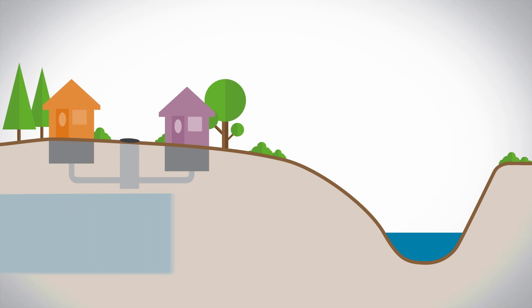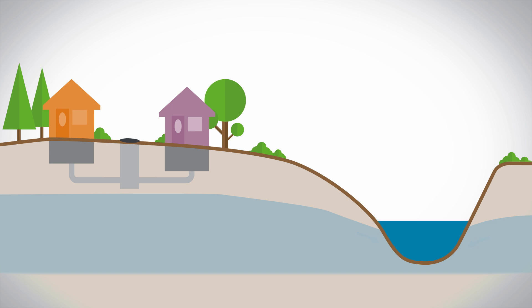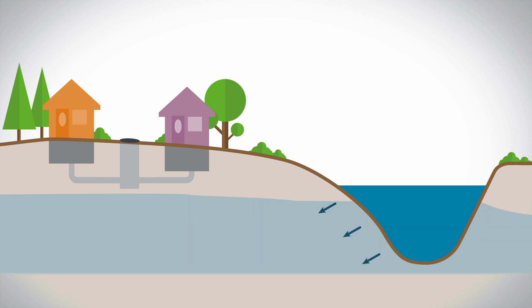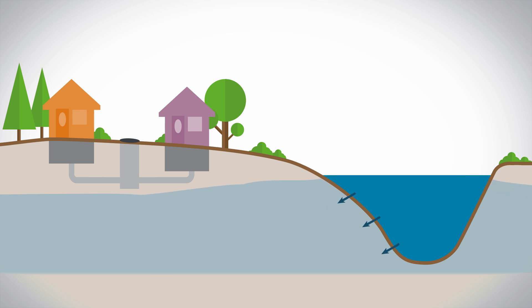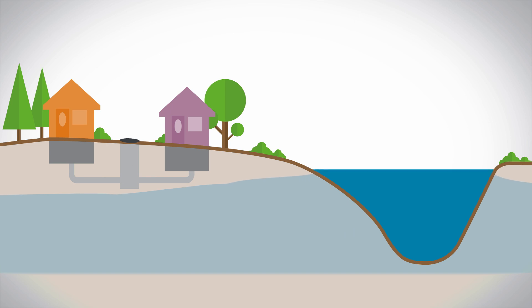Groundwater is essentially the flow of water through interstitial spaces in the soil, so the spaces between various soil particles. During a flood event as the river rises, you'll also have the driving head for groundwater. It forces the water from the river into the floodplain soils, and eventually it rises as well, in response to the river rising.